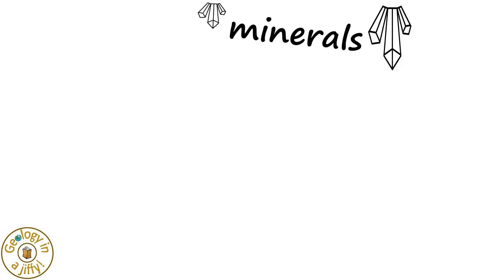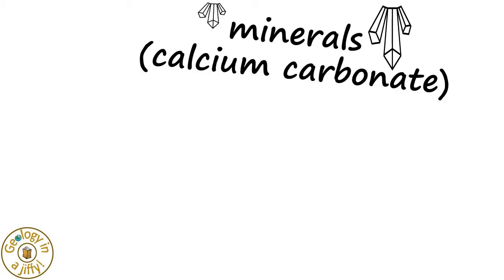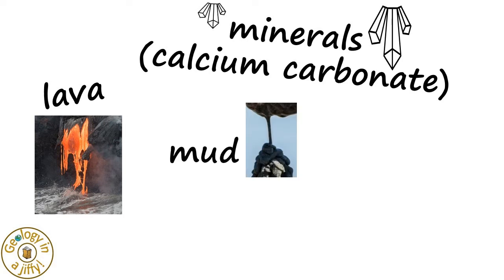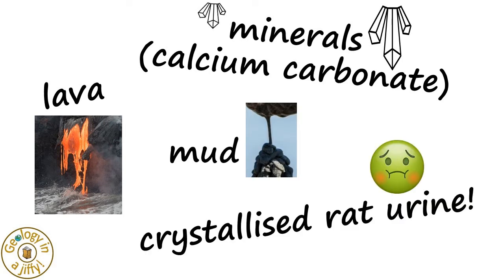Stalactites can be made from a variety of materials, including minerals such as calcium carbonate that has been dissolved in the dripping water. Lava stalactites form where the lava drips from the roof of a lava tube, or a lava flow flows over a cliff. Stalactites can also form from dripping mud, and even the chemicals found in dripping rat urine.